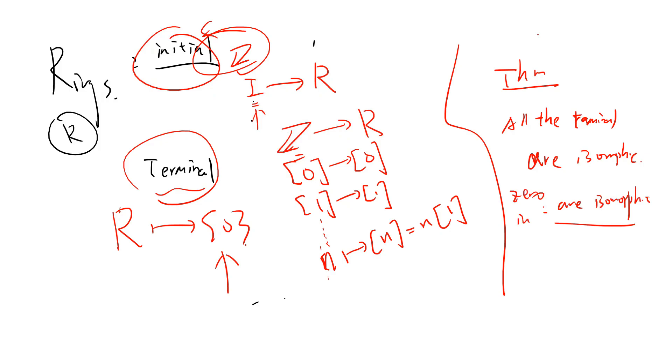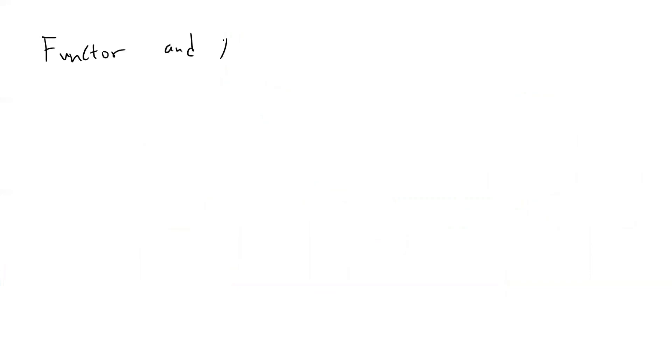All terminal objects are isomorphic to each other, and similarly all zero objects and initial objects are isomorphic. This is a simple exercise — trivial by the uniqueness in the definition. Up to now we have talked about many morphisms. In the next video we will talk about functors and natural transformations. See you guys in the next video.